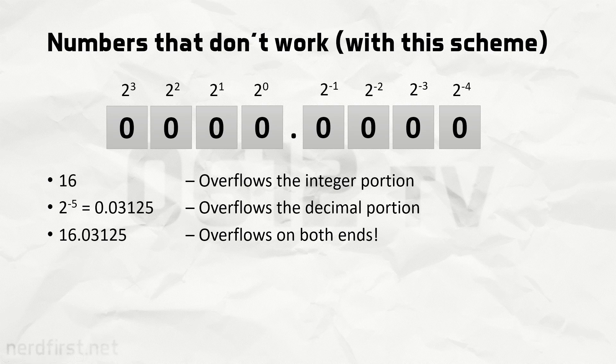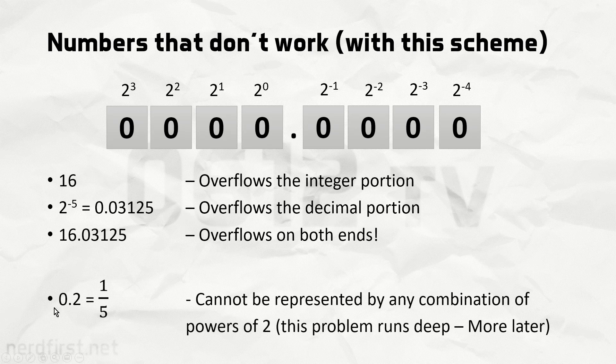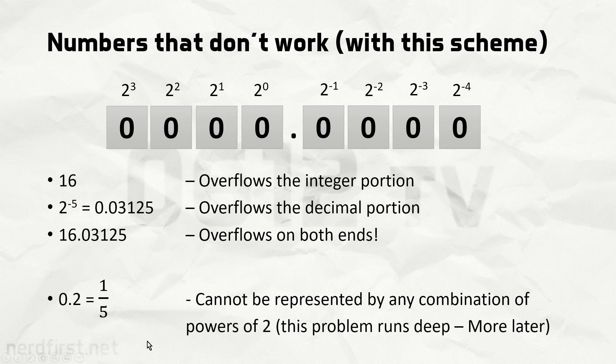There are other restrictions at play as well. If you try to represent 0.2 — as a fraction that's 1 over 5 — there is no possible negative power of 2 that can exactly represent this. This problem runs deep. When we move on to floating point numbers, this problem cannot be solved either, so we're including this here for completeness. Fixed point numbers are a good step towards having decimal numbers, but not quite good enough, because most numbers cannot be represented properly.